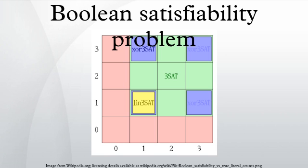This decision problem is of central importance in various areas of computer science, including theoretical computer science, complexity theory, algorithmics, cryptography and artificial intelligence. There are several special cases of the Boolean satisfiability problem in which the formulas are required to have a particular structure.